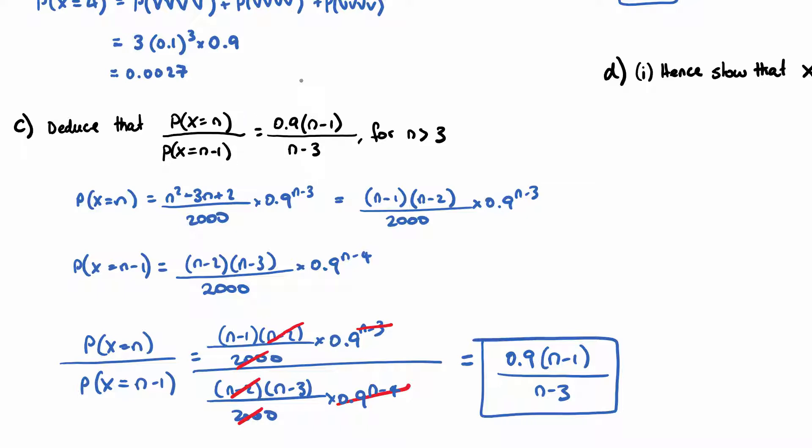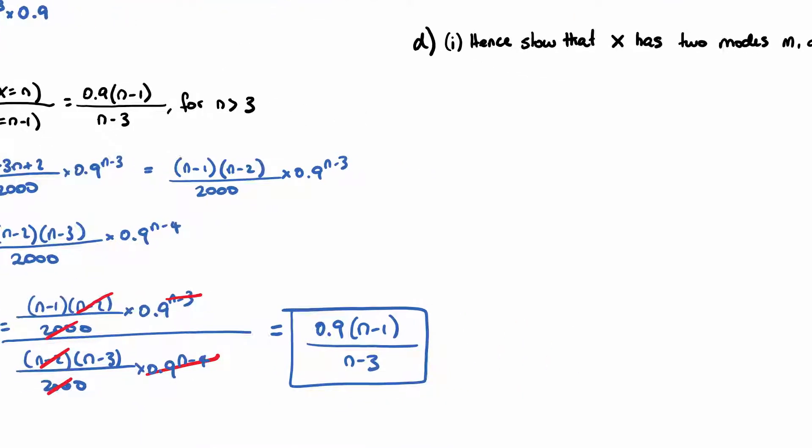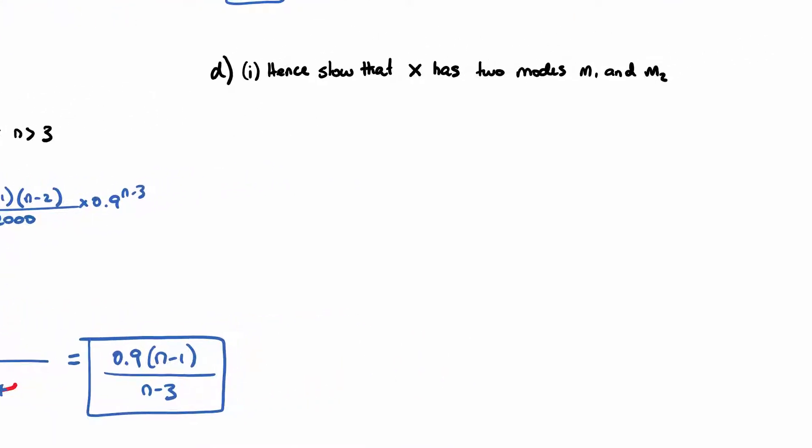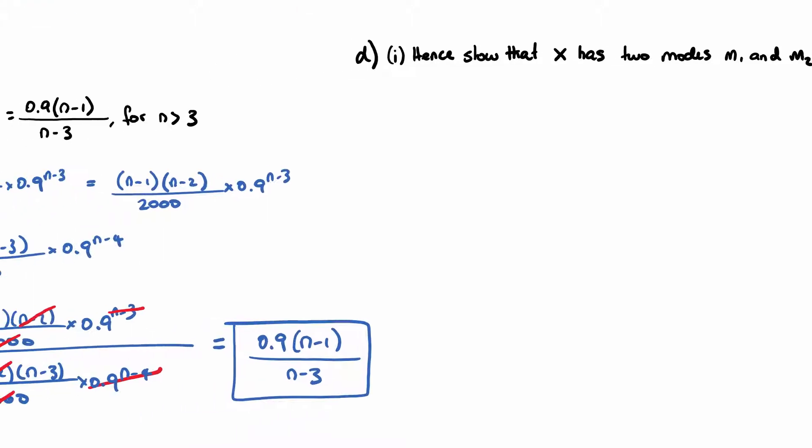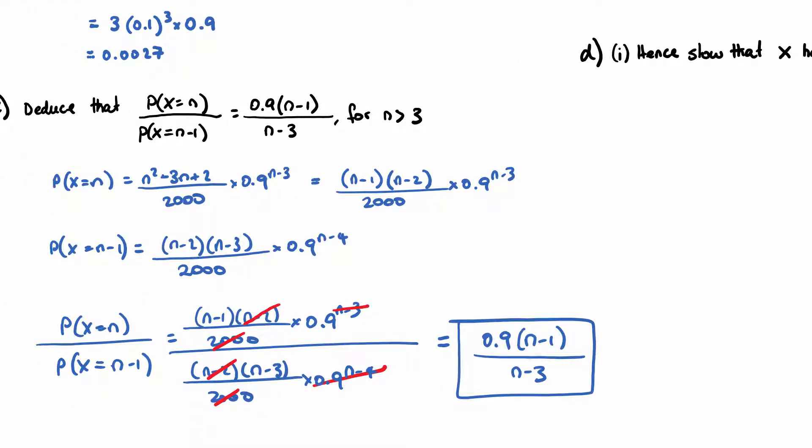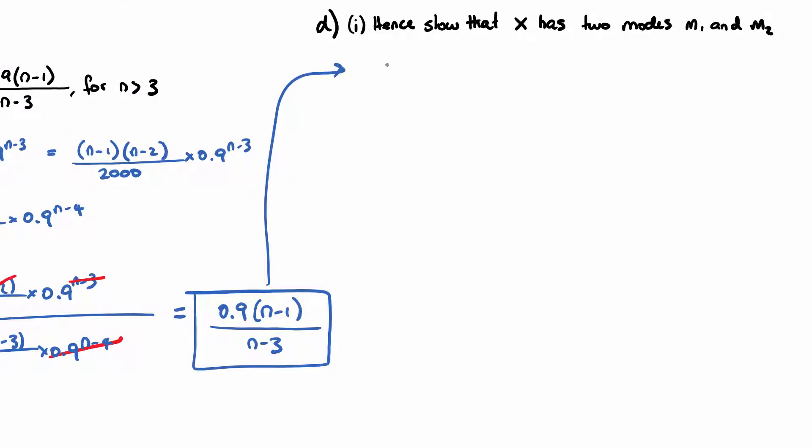So that would therefore be the mode. So what we want to first do is we want to try and solve when this simplified equation, which was this, when does this equal 1? So solve 0.9(N-1) over N-3. When does that equal 1?